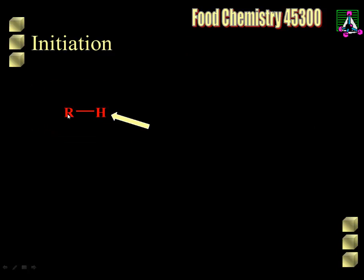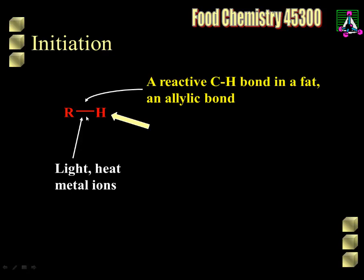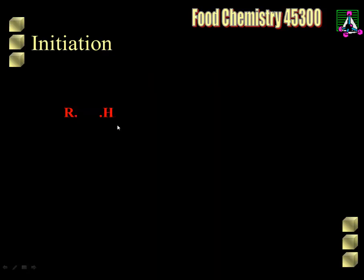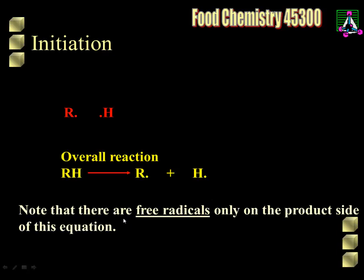In the initiation step, we've got our RH — remembering that this is the rest of the fat molecule. This is the allylic bond and this is the reactive CH bond — that's the one we're interested in. Something will happen — light, heat, a metal ion — something will cause this to break, and we get the R dot radical. In initiation steps, there are free radicals only on the product side of the equation.